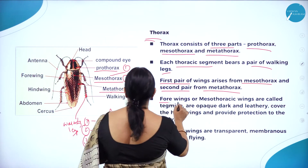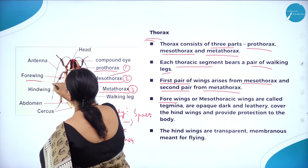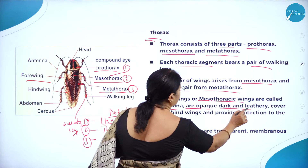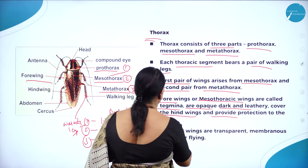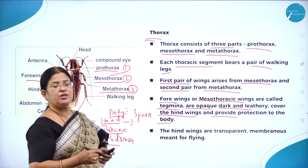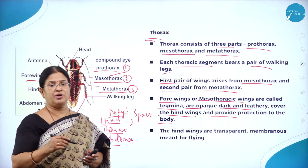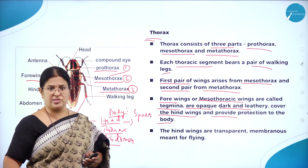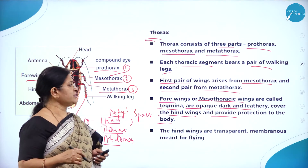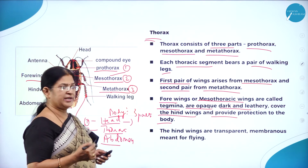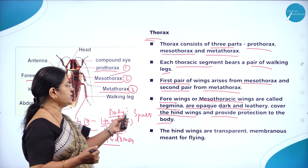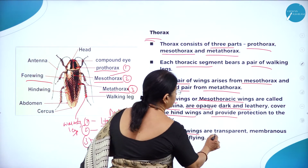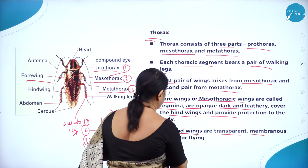Here you can see the four wings — mesothoracic wings are called tegmina, which are opaque, dark and leathery. They cover the hind wings and provide protection to the body. Although wings are present, cockroaches do not fly to great heights — only short distances. The hind wings are transparent and membranous, meant for flying.